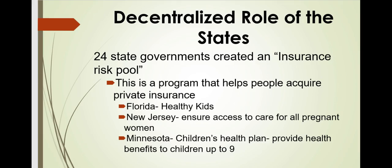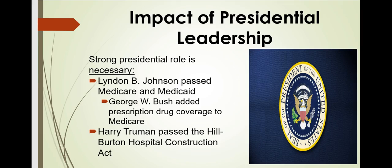Two states took bold policy initiatives to expand health insurance coverage. Oregon, in 1989, embarked on a controversial experiment that expanded Medicaid coverage to more than 100,000 additional people by reducing the Medicaid benefit package. Massachusetts passed a universal health insurance program based on employer and employee mandates.